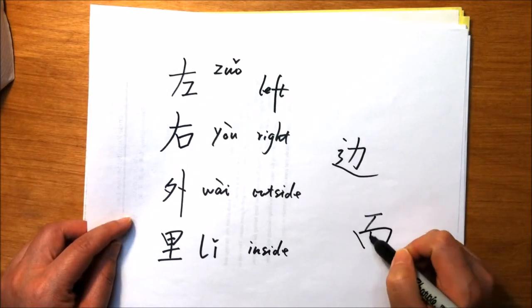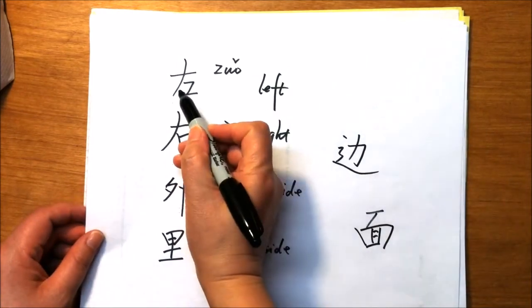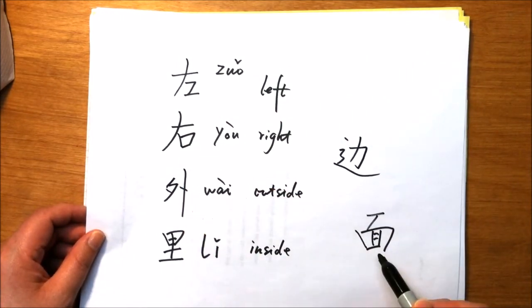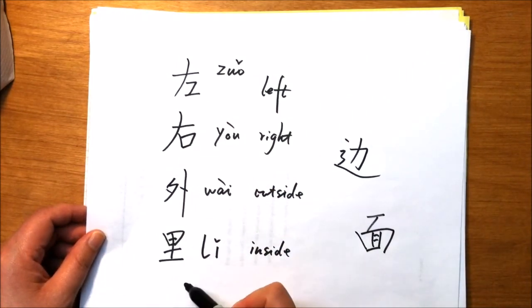面 can also replace 边 in these words: 左面, 右面, 外面, 里面.